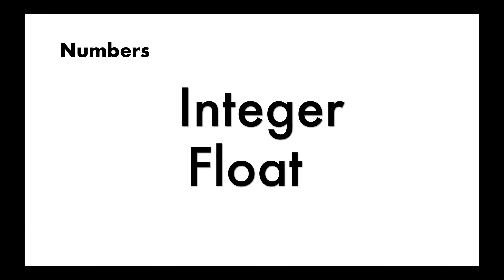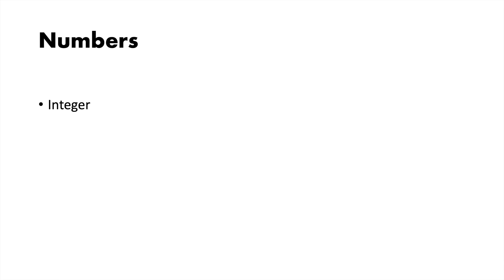When you start dealing with numbers in code, you'll eventually learn the terms integer and float. An integer is a whole number, for example 10, whereas a float contains a decimal point, for example 10.5.